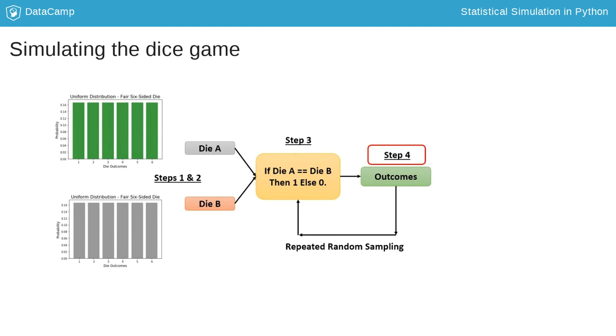Finally, in step 4, we generate multiple outcomes through repeated random sampling. Keep in mind that there is an additional step 5 where we will need to analyze the outcomes. But for now, let's focus on the first 4 steps and make sure we are comfortable with them.